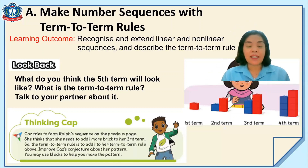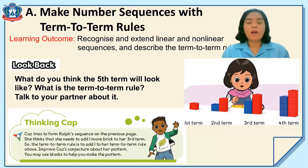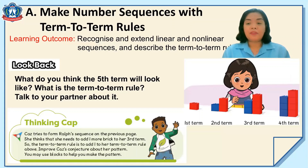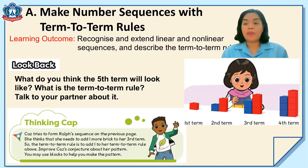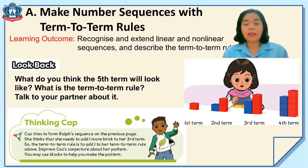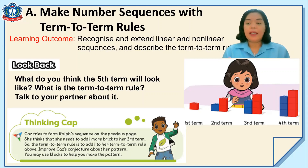We have: make number sequences with term-to-term rules. What does 'rule' mean? Rule means an order or law. Look at the picture of the girl. What do you think the fifth term will look like? What is the term-to-term rule? The first term has only one brick. On the second term, it becomes three bricks — so we add two bricks. On the third term, there are five bricks. So how many bricks did we add? If we continue, what do you think the fifth term will look like? How many bricks will be in the fifth term?